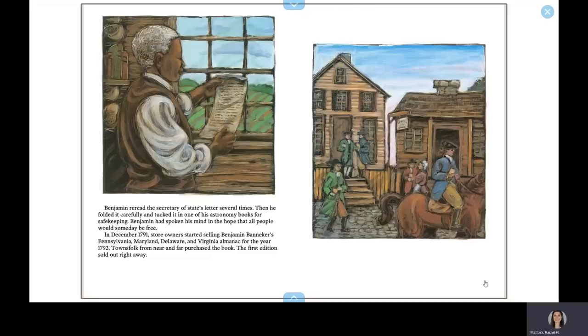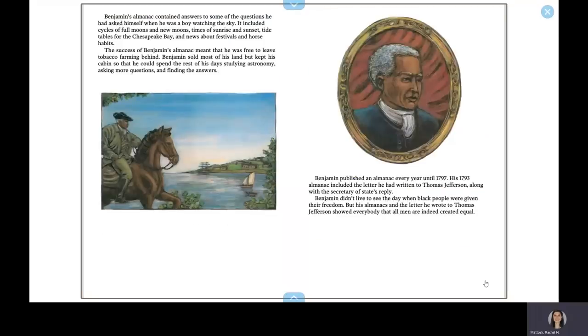Benjamin had spoken his mind in the hope that all people would someday be free. In December 1791, store owners started selling Benjamin Banneker's Pennsylvania, Maryland, Delaware, and Virginia almanac for the year 1792. Townsfolk from near and far purchased the book, the first edition sold out right away. Benjamin's almanac contained answers to some of the questions he had asked himself when he was a boy watching the sky. It included cycles of full moons and new moons, times of sunrise and sunset, tide tables for the Chesapeake Bay, and news about festivals and horse races. The success of Benjamin's almanac meant that he was free to leave tobacco farming behind. Benjamin sold most of his land but kept his cabin so that he could spend the rest of his days studying astronomy, asking more questions, and finding the answers.